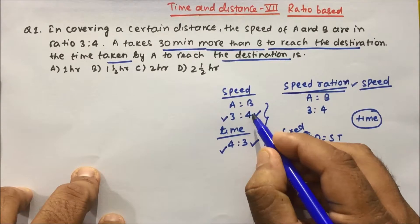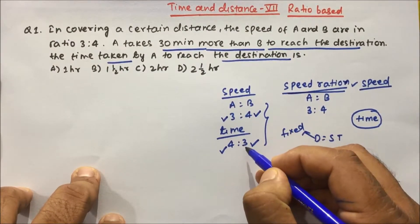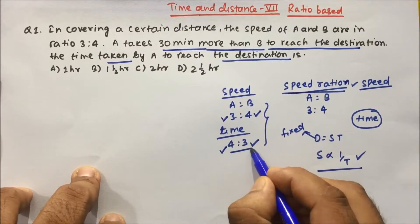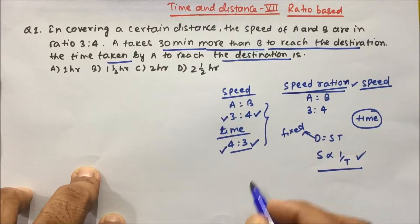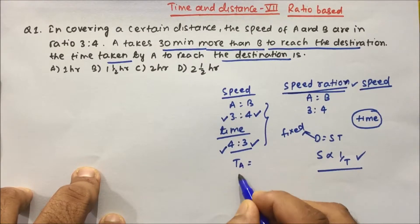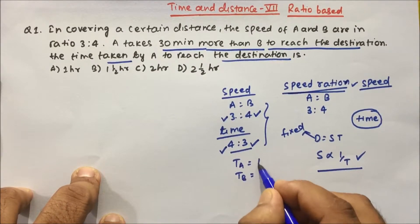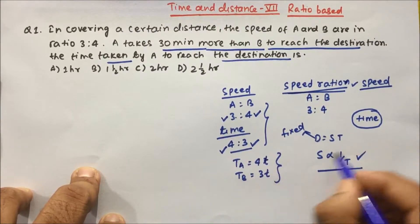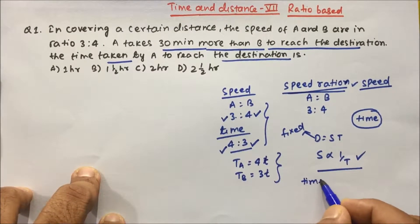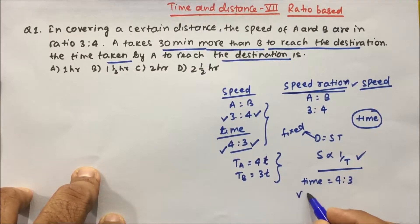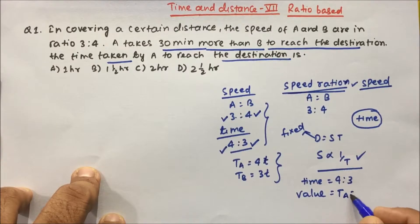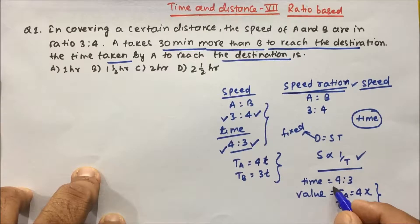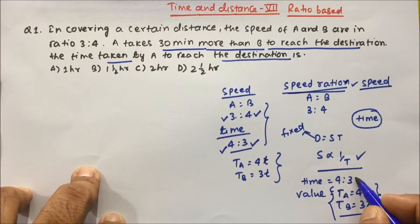When you convert speed in terms of time, it will become 4 is to 3. So time of A and time of B equals 4t and 3t. We can write it this way because when a value is given in ratio and you want to write in terms of value, you can write time of A = 4x and time of B = 3x. In any ratio question, we can easily write in terms of value.